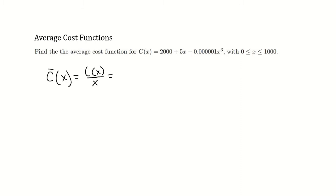So this is 2000 plus 5x minus 0.0000001x cubed, all of that over x.